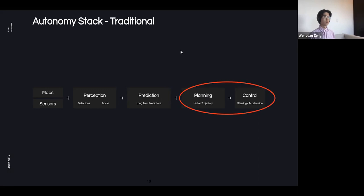Hello everyone, I'm Wen Yuan Zong, a research scientist at Uber ATG. In the following, I'm going to talk about learning-based end-to-end planning approaches.